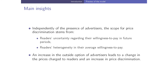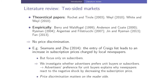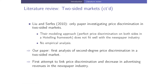We show that independently of the presence of advertisers, there is scope for price discrimination, coming from readers' uncertainty about willingness to pay in future periods and from their heterogeneity. An increase in the outside option of advertisers — empirically the introduction of TV advertisement — leads to a change in prices charged to readers and an increase in price discrimination. Our paper is the first analysis of second-degree price discrimination in a two-sided market both empirically and theoretically.